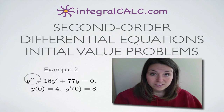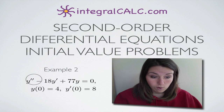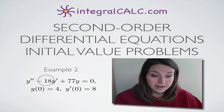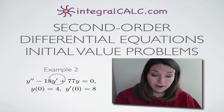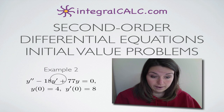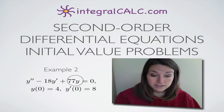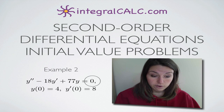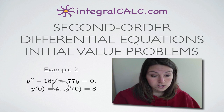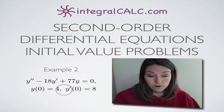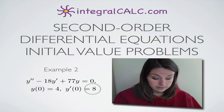y double prime, or the second derivative of y, minus 18 times y prime, or the first derivative of y, plus 77y equals zero. And they've given us the following two initial conditions: y of zero equals four and y prime of zero equals eight.